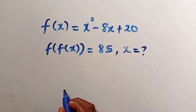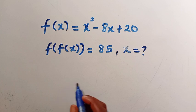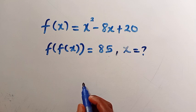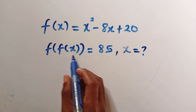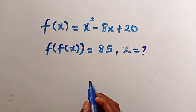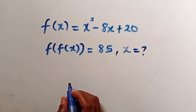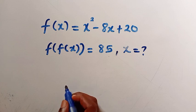Good day viewers, you are welcome. We have a nice and interesting functional equation: f of x equals x squared minus 8x plus 20, and a composite function f of f of x equals 85. What is x? I'll be solving this question in two different ways. You can pause this video and give it a try.